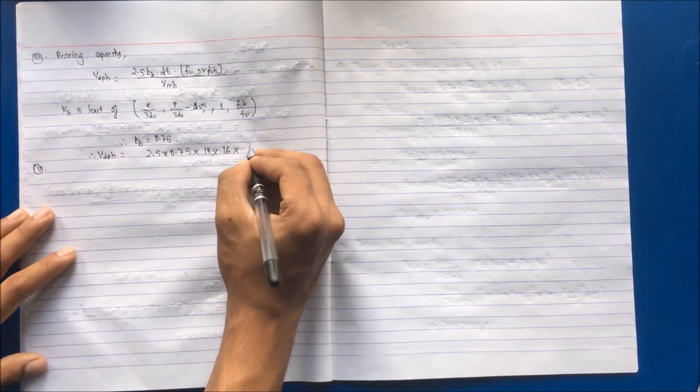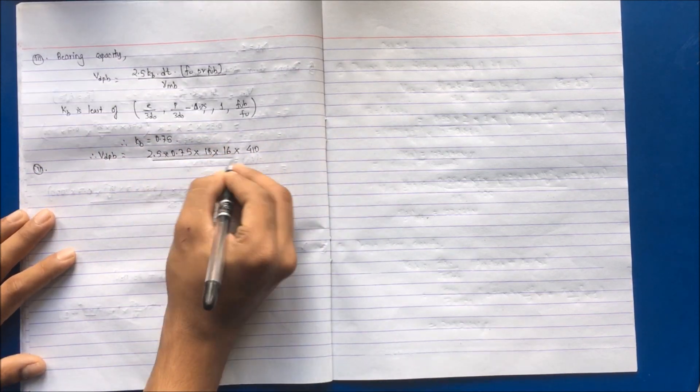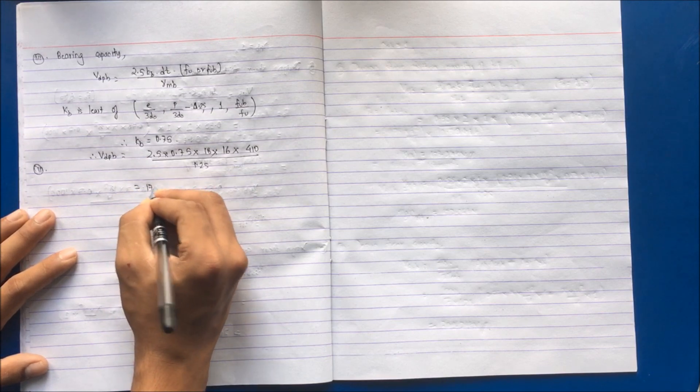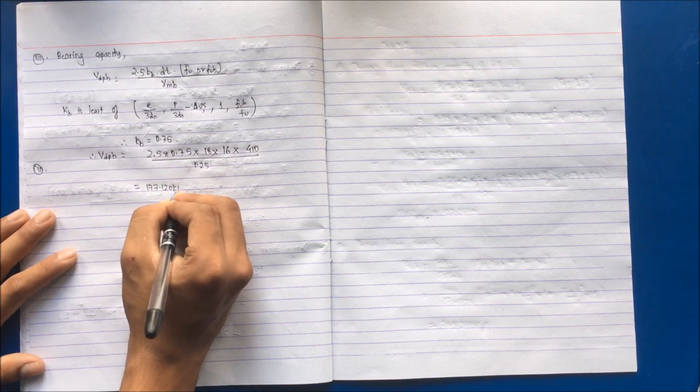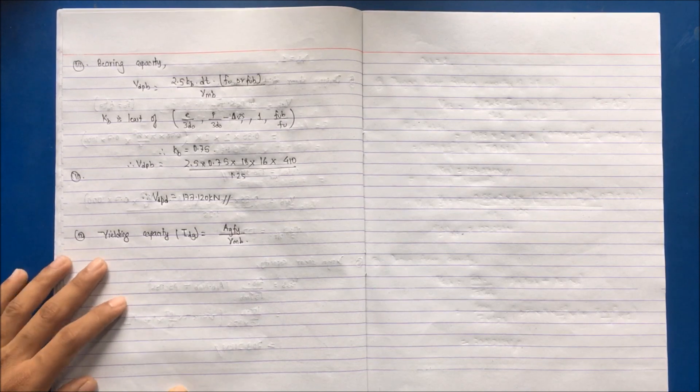For FU or FUB, whichever is smaller: FU = 410 N/mm² and FUB = 1000 N/mm², so we take FU = 410. Dividing by γMB = 1.25 gives VDPB = 177.12 kN. The fourth step is to find yielding capacity, which can be found in the code book at page 32.